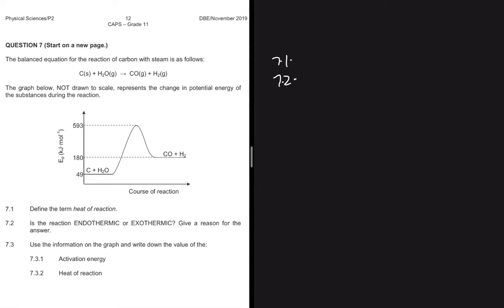We know that in endothermic, the energy of the products should be greater than the energy of the reactants. And then in exothermic is vice versa, really. We have the energy of the reactants being greater than the energy of the products. So let's go to the graph and see which one we have here.